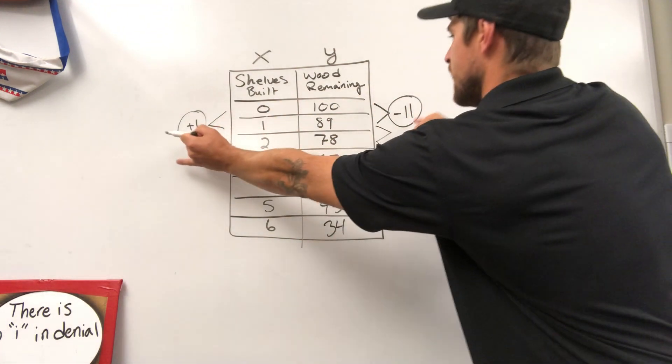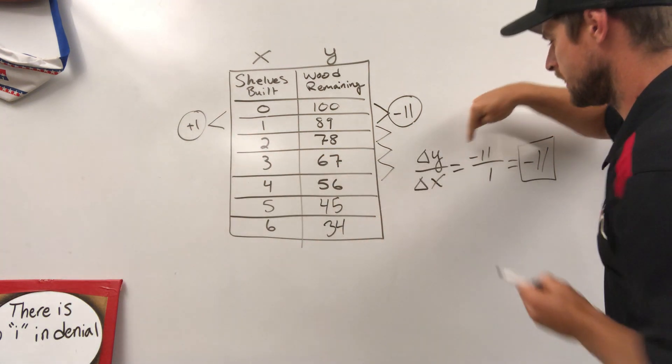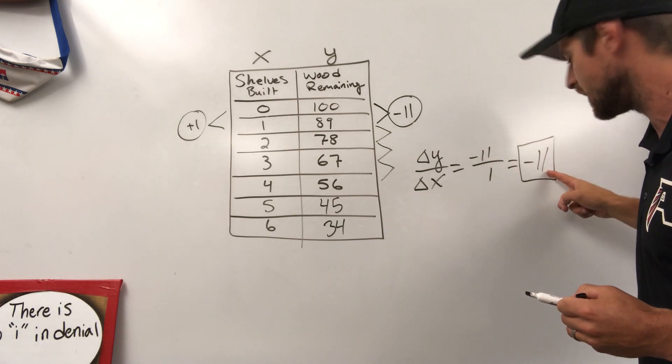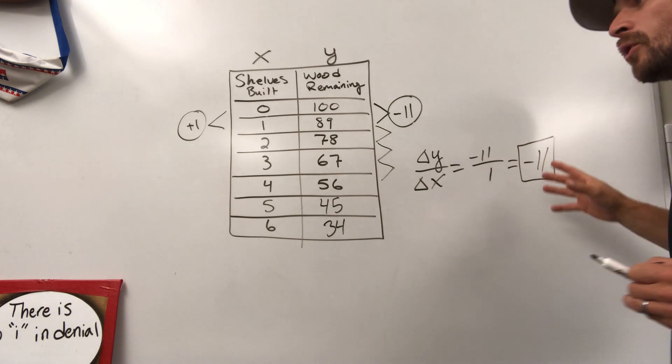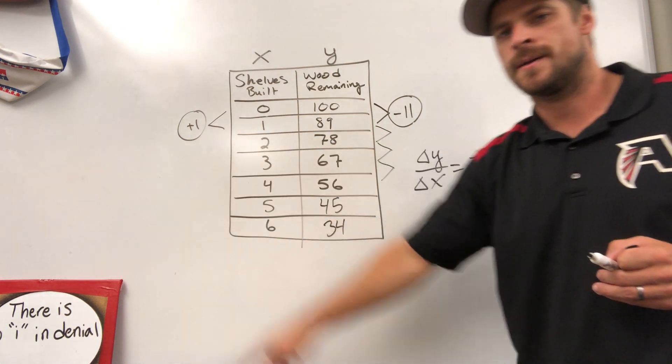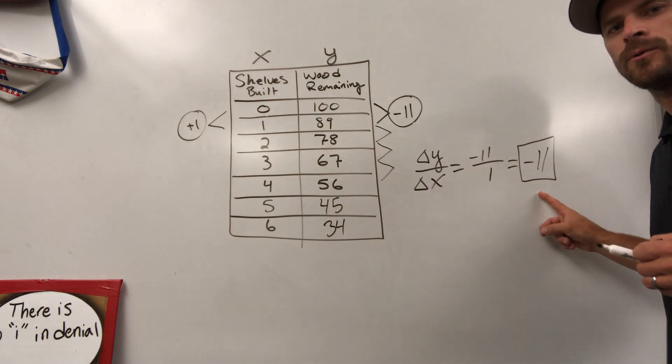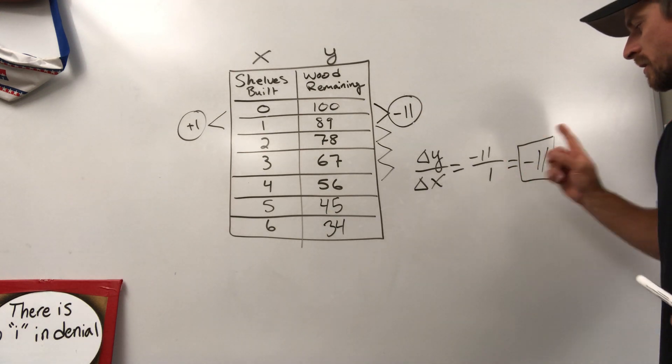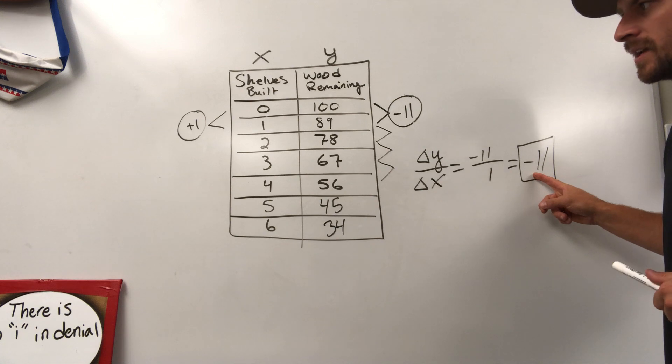We have to put those together as a ratio, negative 11 over one. And once you divide a negative and a positive, you will always end up with a negative result. So it is not both, even though there is a positive increase happening here. We have to put those together to find out what the rate comes out to. So this is a negative rate of change. It has a constant rate of change of negative 11.